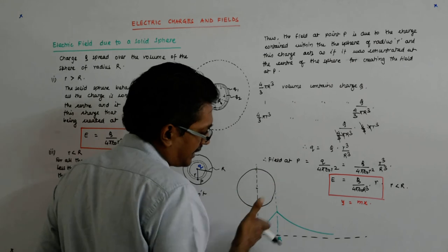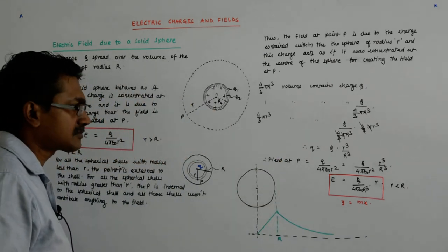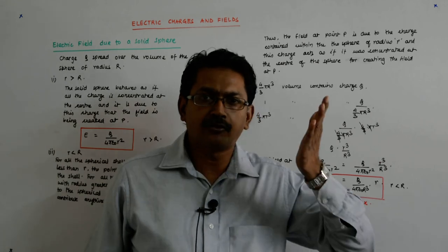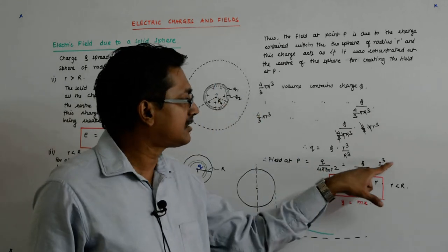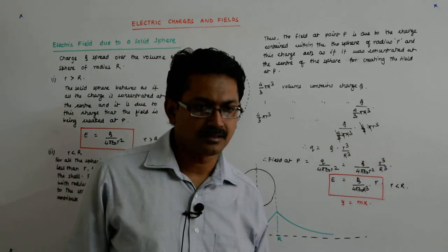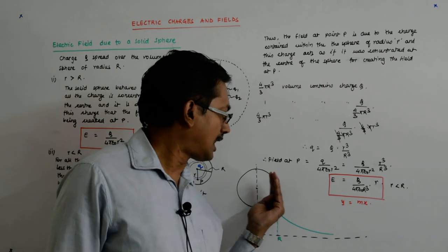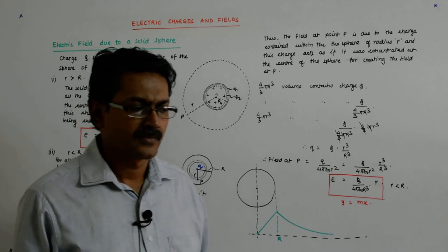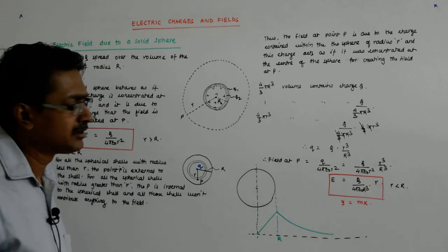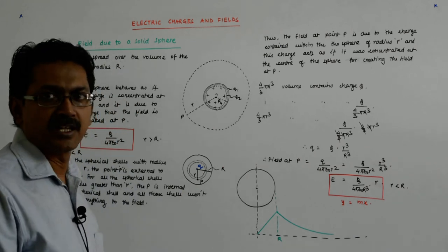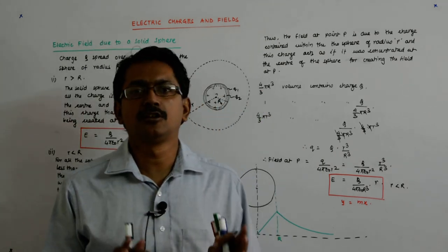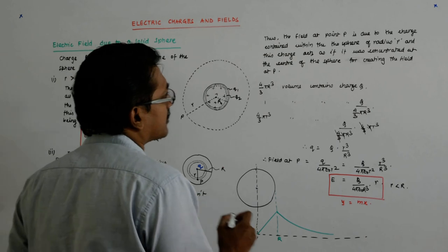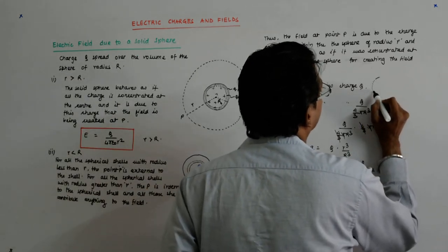Within the sphere, the field keeps increasing as you go outward. Why? Because as you go out, the distance increases so the field tends to fall as 1/r², but the enclosed charge increases as r³ — so the net effect is that the field increases proportionally to r. Once you go outside, the charge remains constant and only the distance changes, so it behaves like a point charge.